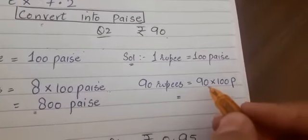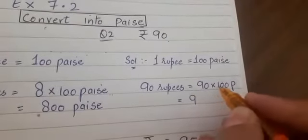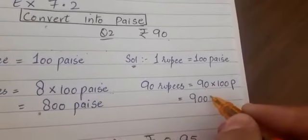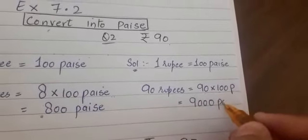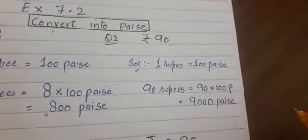So when you multiply 90 by 100, you know 9 multiplied by 100 is 900, and adding one more zero that means 9000 paise. So 90 rupees makes 9000 paise.